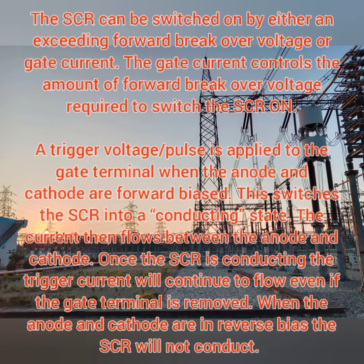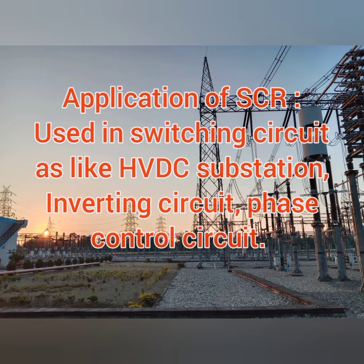When the anode and cathode are in reverse bias, the SCR will not conduct. The forward biased condition applies to junctions J1 and J3, while the reverse bias condition applies to J2, because J1 and J3 start as P-N but J2 starts as N-P. The applications of SCR include HVDC substations, inverting circuits, and phase control circuits.